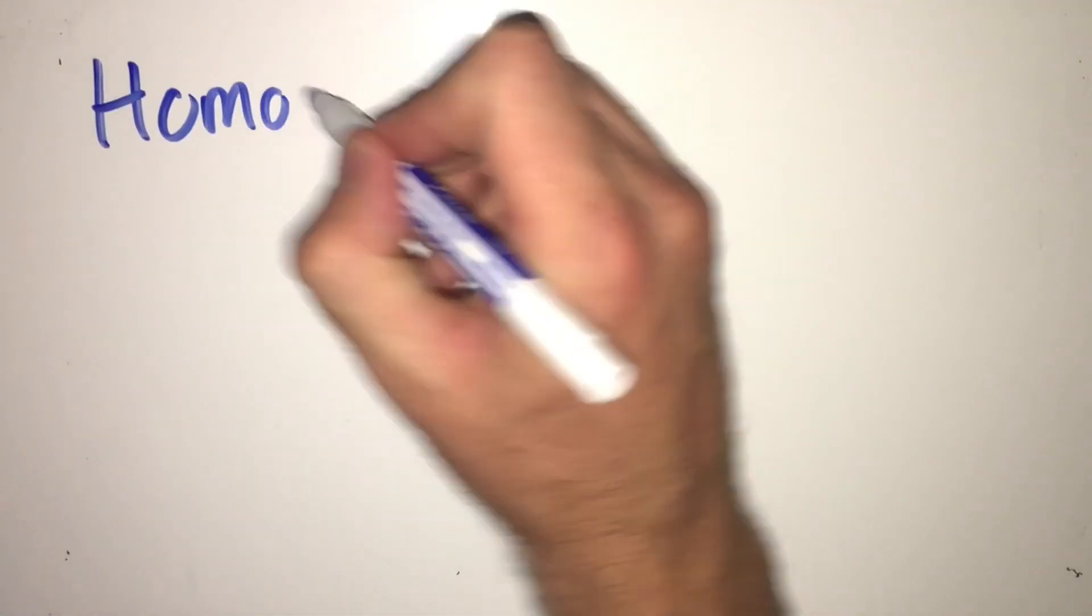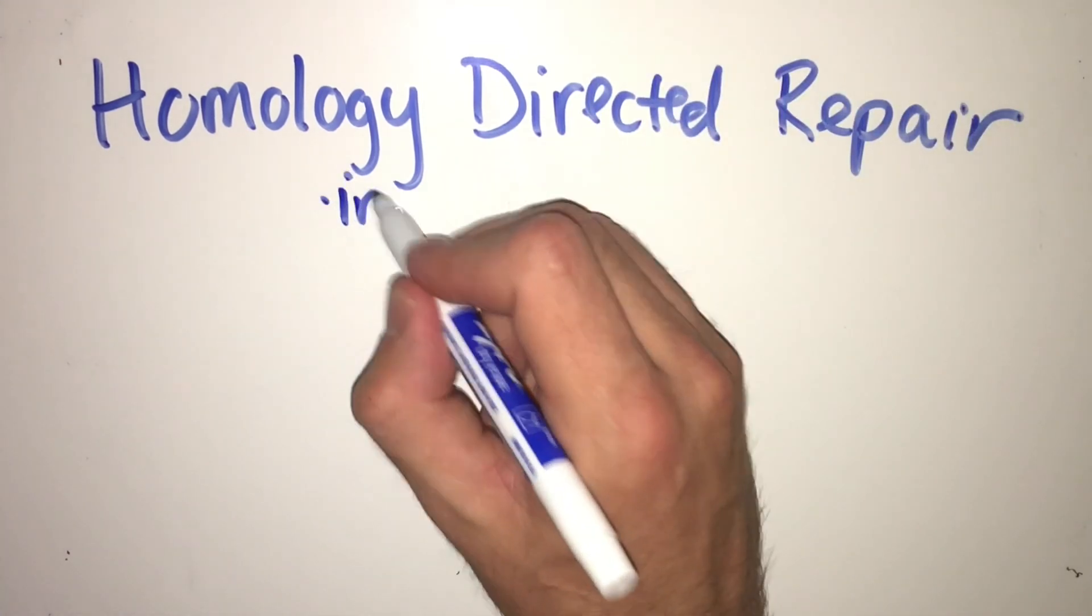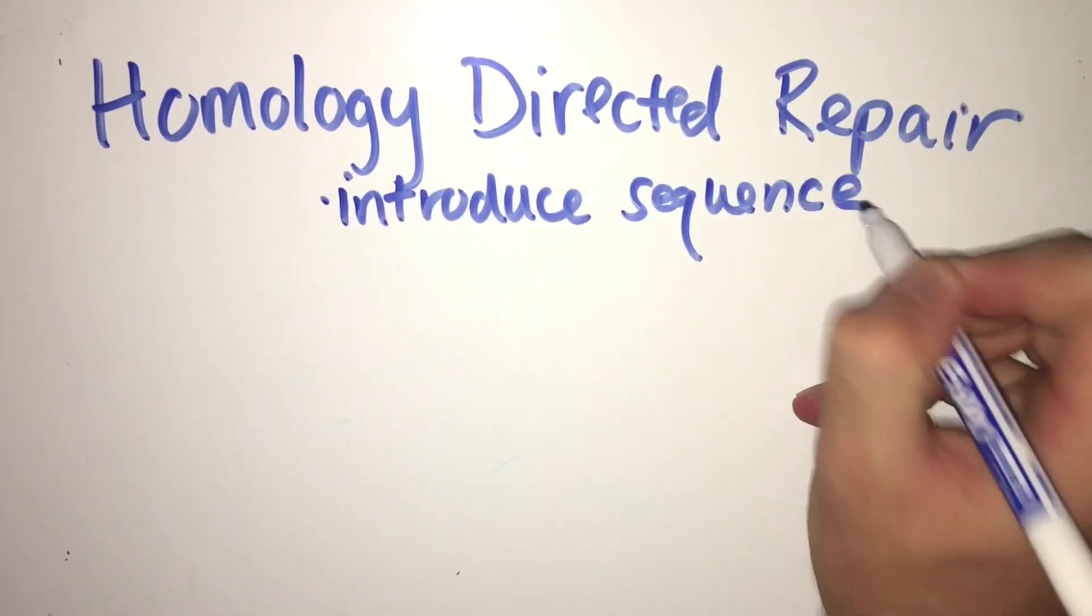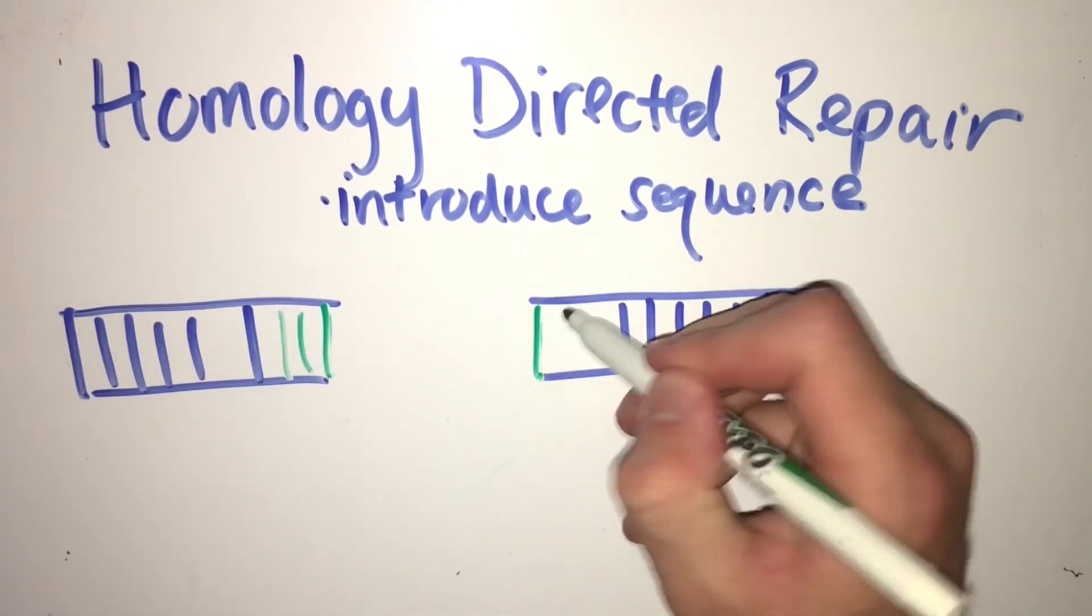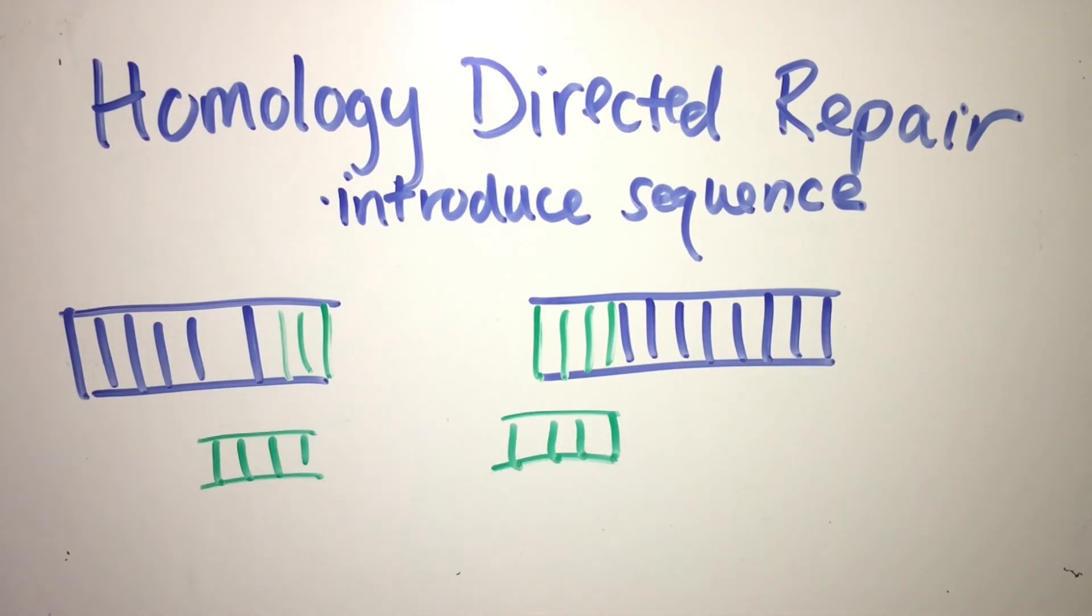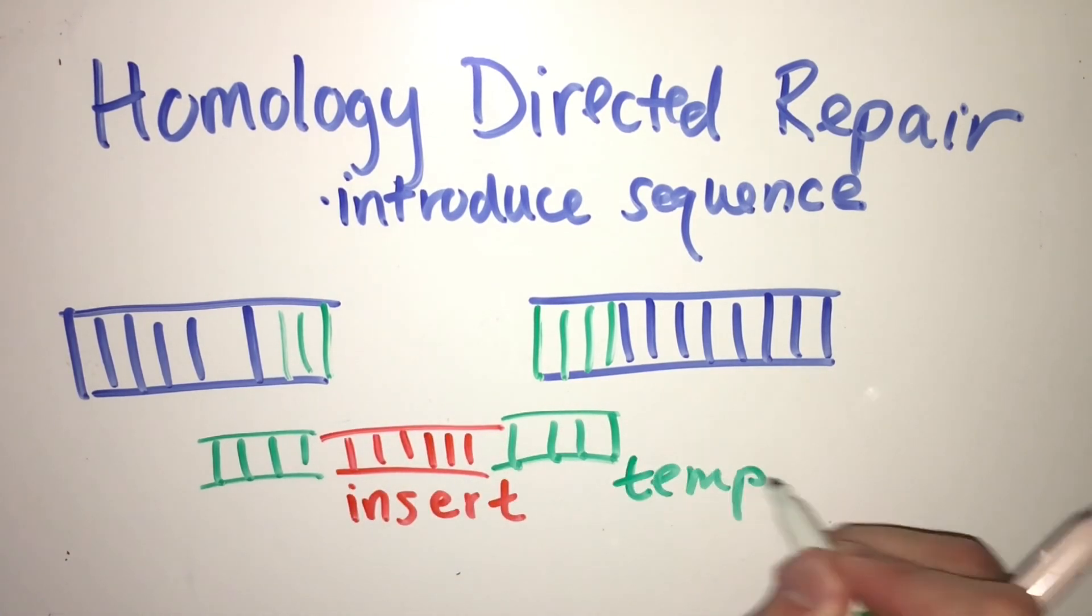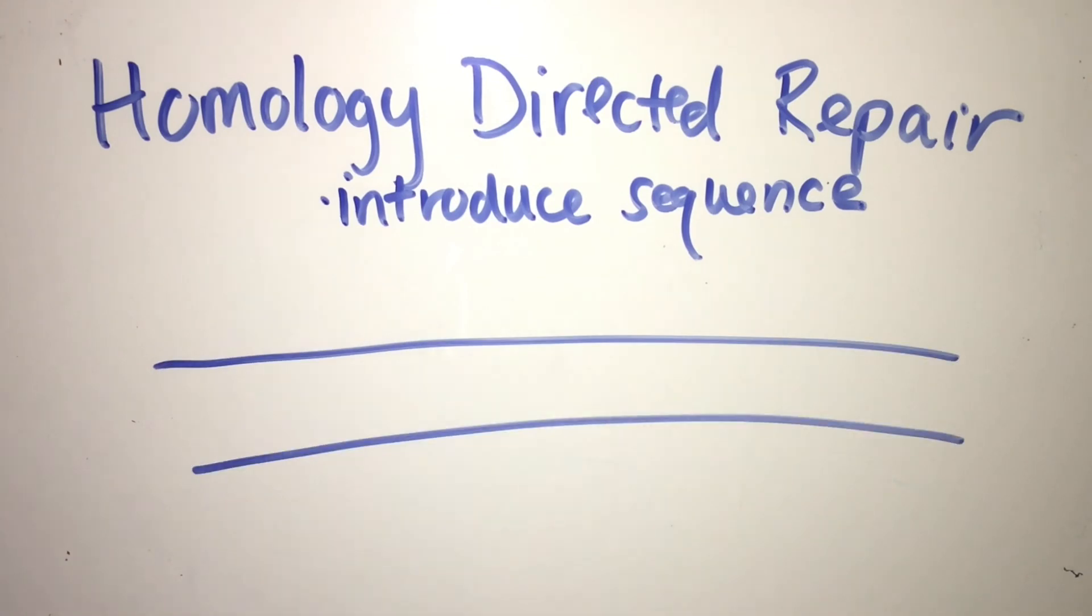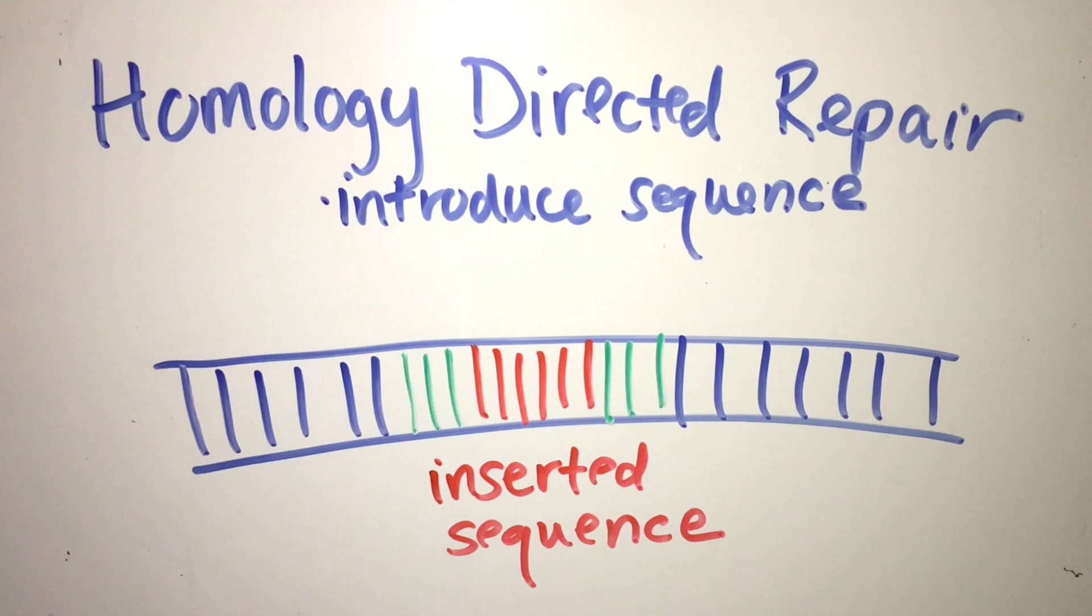Homology-directed repair, or HDR, is more often used to edit the genome by swapping bases or introducing a short sequence where the break occurred. To introduce a new sequence, a new DNA fragment that contains the insert sequence must be put into the cell. The fragment must contain the insert, pictured in red, flanked by regions that match the regions surrounding the double-stranded break, pictured in green. The sequences in green are then used as templates to fix the break and introduce the new sequence. The final result is a continuous DNA strand that is ready for transcription.